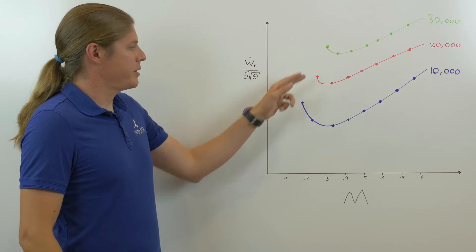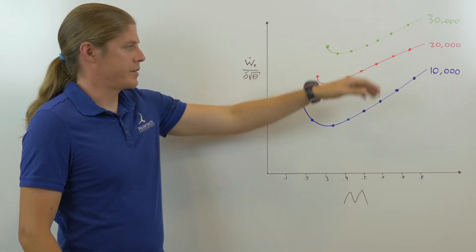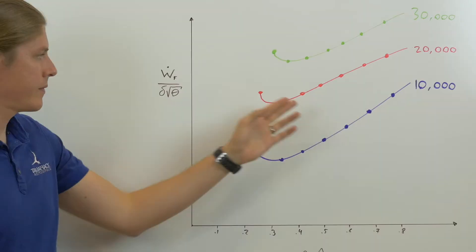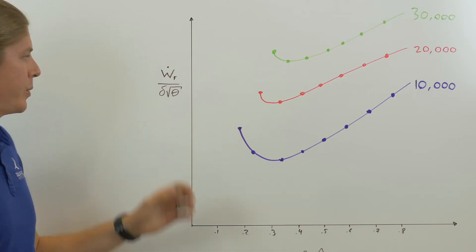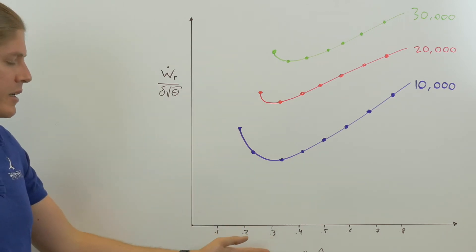By flying constant W over delta curves, say 10,000, 20,000, 30,000 for a particular airplane, at different Mach numbers, we can construct this relationship with a generalized fuel flow on the y-axis and the Mach number on the x.